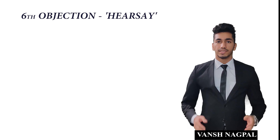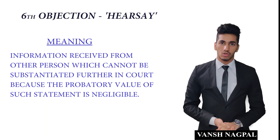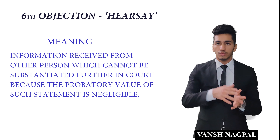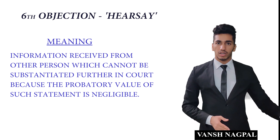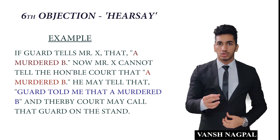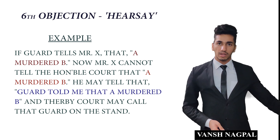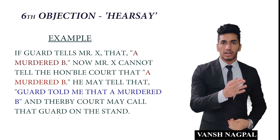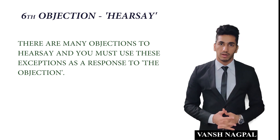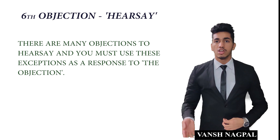The sixth objection is hearsay. Hearsay is one of the most technical objections. It occurs when a witness repeats a statement made by someone else — telling it in their own words. The court finds such statements to have lower probative value, since the original person who made the statement is not on the stand. For example, if Mr. X told witness A about a murder by B, and A repeats it in court, that is hearsay. There are many exceptions to hearsay; if you'd like a separate video on that, leave a comment. If opposing counsel argues hearsay, you must invoke the applicable exceptions to explain why the statement is admissible.